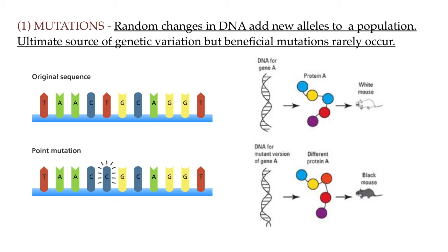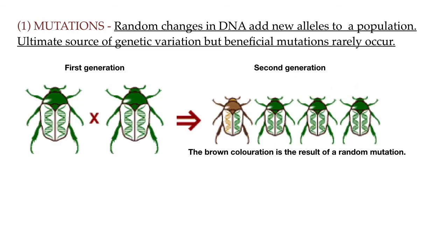Mutations are essentially the raw material on which evolution acts. A mutation could cause parents with genes for bright green coloration to suddenly have an offspring with a gene for brown coloration. This would then change the allele frequency in the gene pool and make genes for brown coloration more frequent in the population than they were before the mutation.